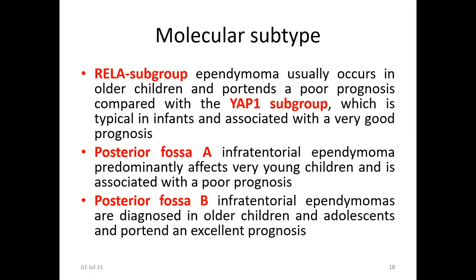Looking at molecular subgroups: supratentorial tumors have either RELA fusion (poor prognosis) or YAP1 fusion (very good prognosis). Posterior fossa group A tumors have poor prognosis and arise from the lateral recess, the foramen of Luschka. Posterior fossa group B tumors arise from the foramen of Magendie area, occur mostly in adolescents and children, and carry an excellent prognosis.